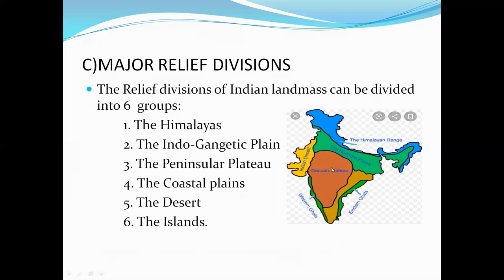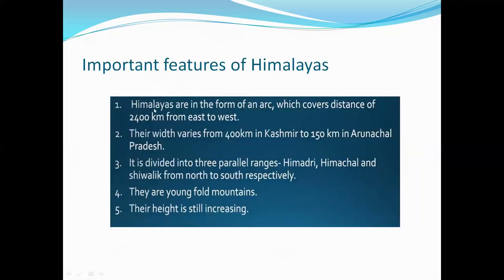The Himalayas are in the form of an arc covering a distance of 2,400 kilometers from east to west. Their width varies from 400 kilometers in Kashmir to 150 kilometers in Arunachal Pradesh. The Himalayas are divided into three parallel ranges — Himadri, Himachal, and Shivalik — from north to south respectively. They are young fold mountains and their height is still increasing.